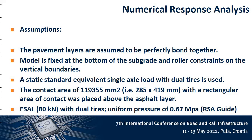Part of the assumptions include that the pavement layers are assumed to be perfectly bonded. In the Abaqus software, which we used for the analysis, the model is fixed at the bottom of the subgrade and a roller constraint is applied on the vertical boundaries. A static standard equivalent axle load with dual tires is used in the analysis. The contact area is taken as rectangular, and the equivalent axle load used is 80 kN with dual tires and a uniform pressure of 0.67 MPa, based on the South African guide.